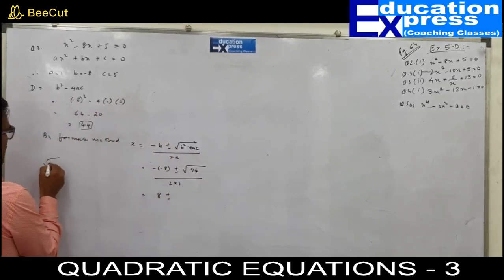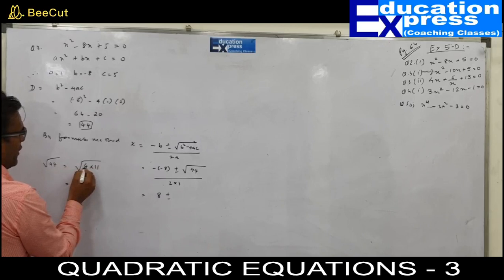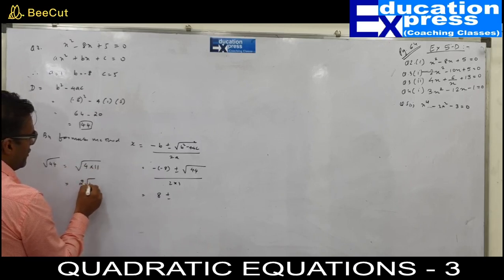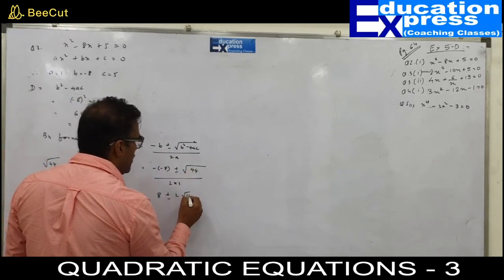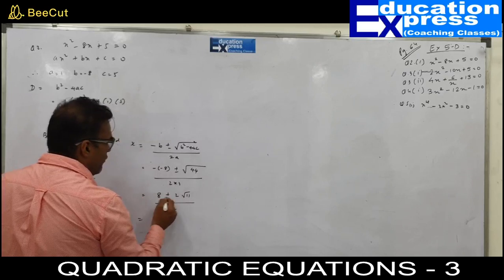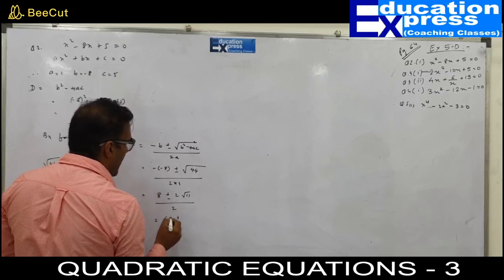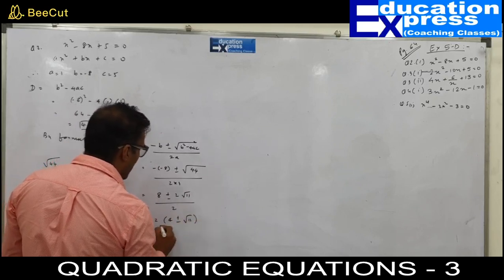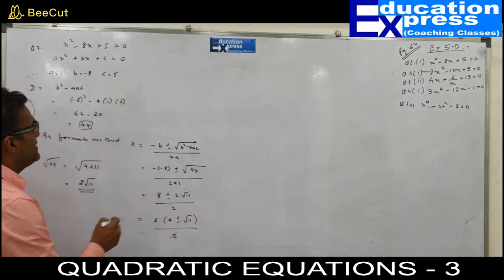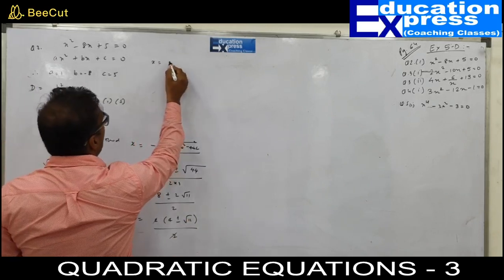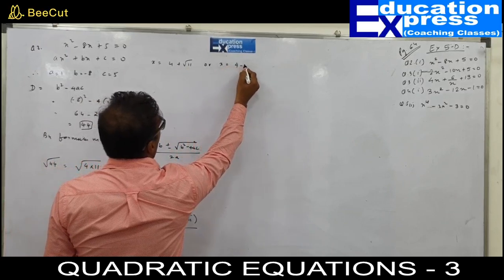Root 44 can be further simplified into root of 4 into 11. The square root of 4 is 2, so it would be 2 root 11. In place of root 44, we write 2 root 11 upon 2. The factor 2 is common, so it comes out. What remains is 4 plus or minus root 11. Therefore x equals 4 plus root 11, or x equals 4 minus root 11.